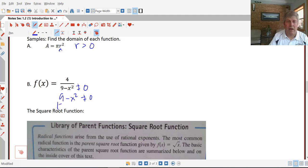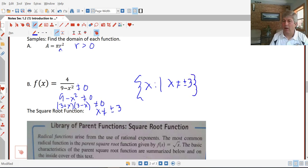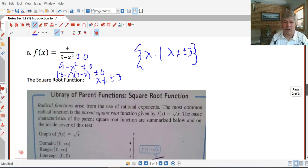So we can factor that into 3 plus x times 3 minus x better not equal 0. So our domain then is anything but 3 or negative 3. So the elements in the set x such that x can't equal plus or minus 3 would be a valid way of displaying that particular answer.